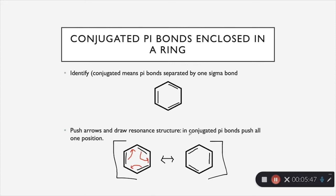Our last pattern is a conjugated pi bond enclosed in a ring. Conjugated means you have pi bonds separated by one sigma bond. You can see in the example that every other bond is a pi bond and every other bond is a sigma bond or single bond. For this pattern, you're simply going to take the pi bonds in the conjugated ring and push them all over one spot.